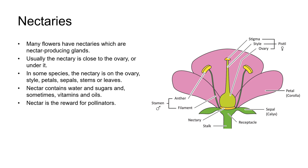Many flowers have nectaries, which are nectar-producing glands. Usually the nectary is close to or underneath the ovary, though in some species it may be on the ovary, the style, the petals, the sepals, the stems, or even the leaves. Nectar contains water, sugars, and sometimes vitamins and oils, and it serves as the reward for pollinators.